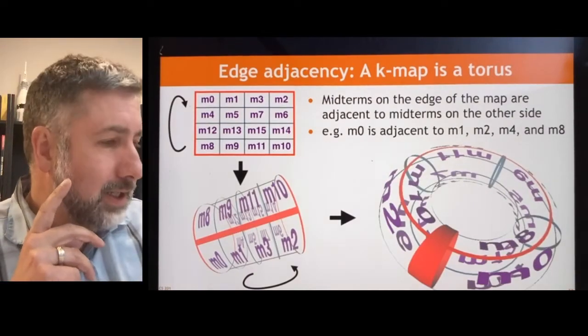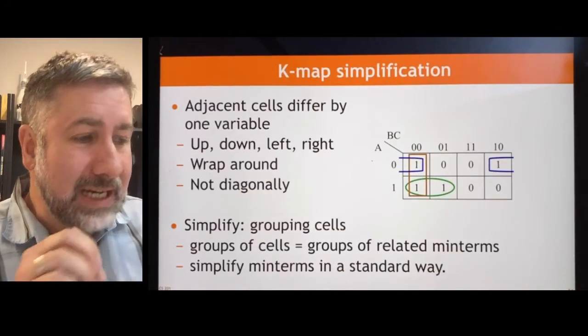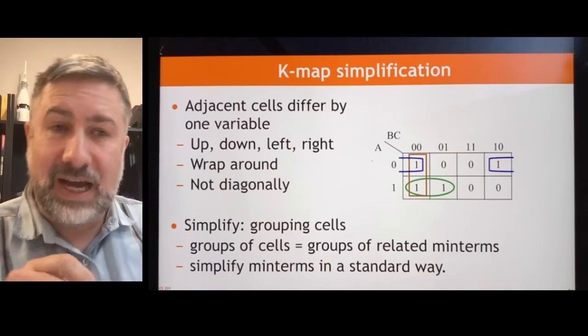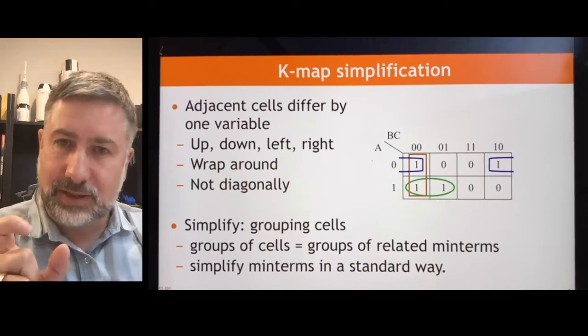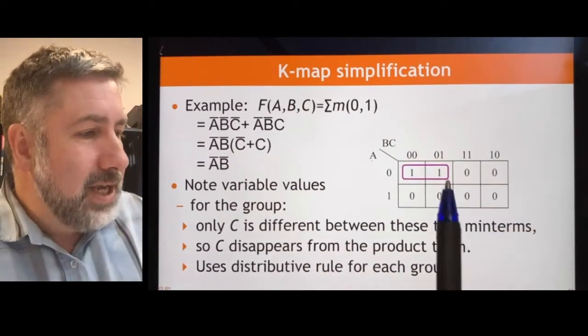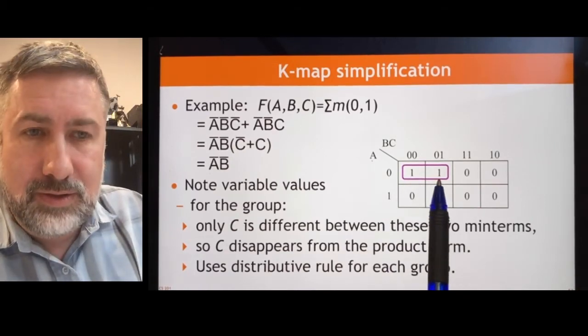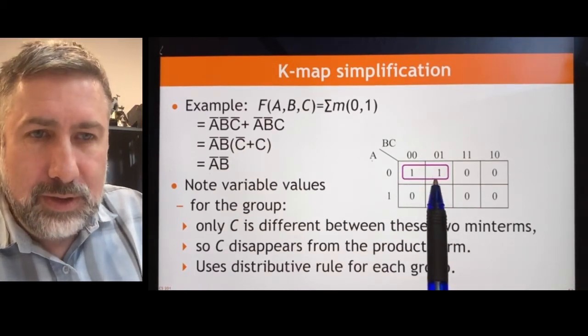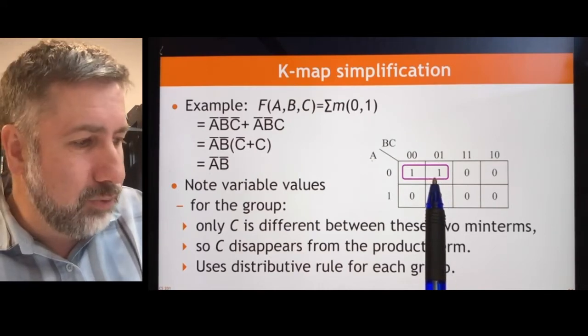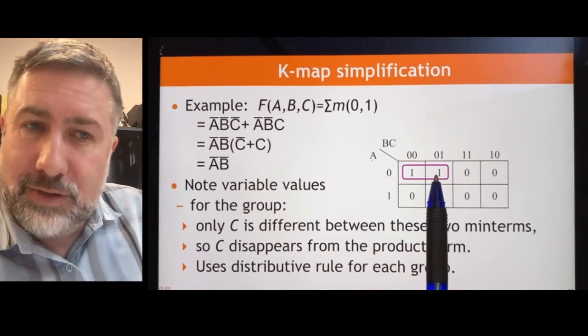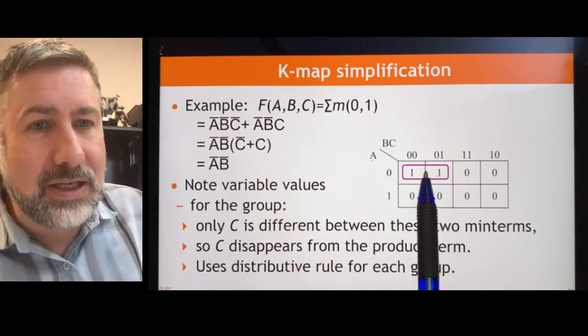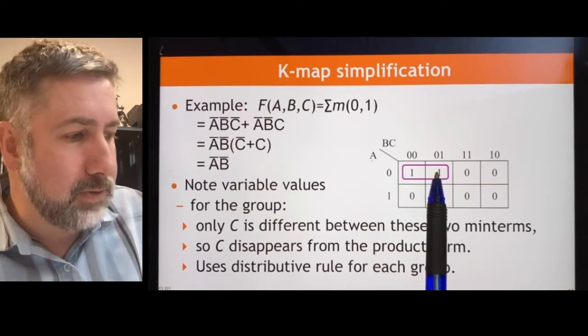Well, we'll talk about the edge adjacency in a second. Because adjacent cells differ by one variable, we can simplify by collecting adjacent cells. Each pair of cells differs by one variable, which means if you have a pair of cells that you collect together in a group, then you can read off of the K-map with practice. That's a little bit of work, but it's not too hard. You can read off of the K-map the simplified term in standard form that these two minterms correspond to. Here's how it works.